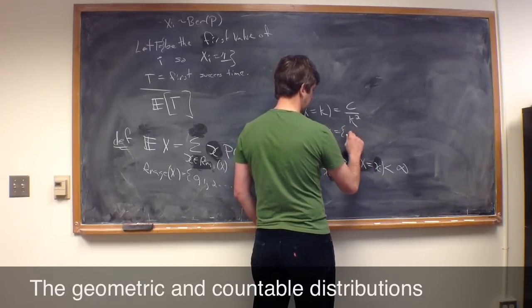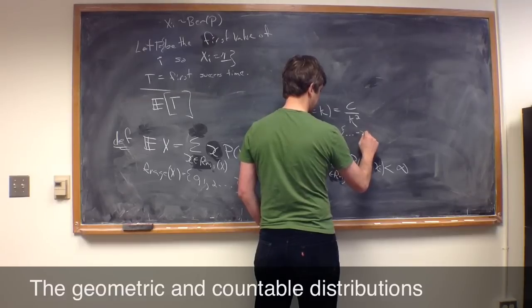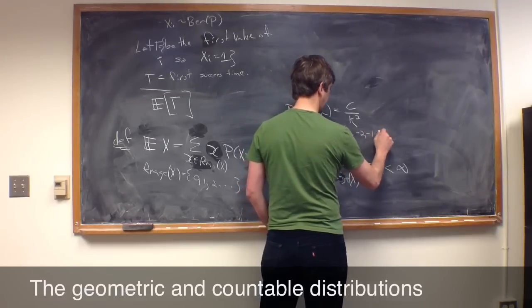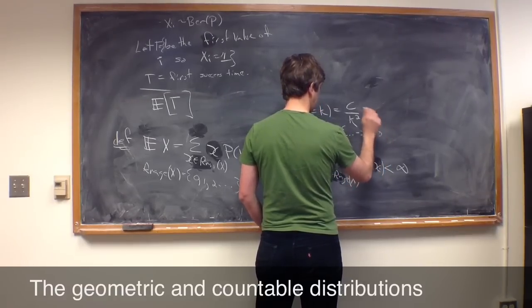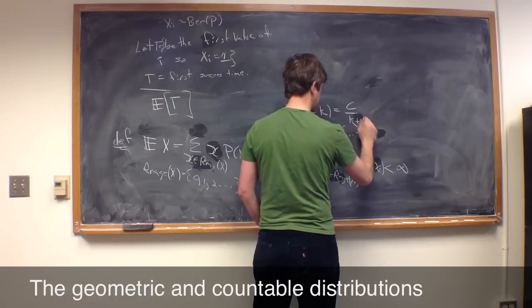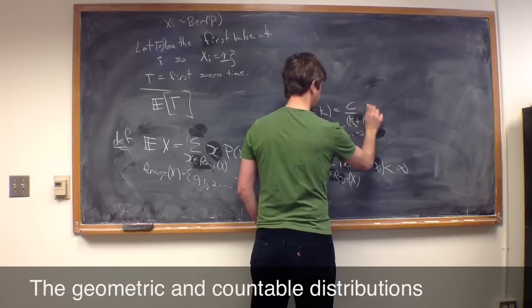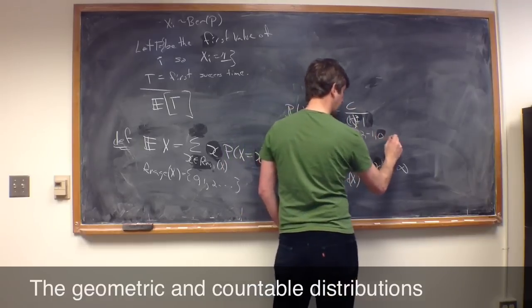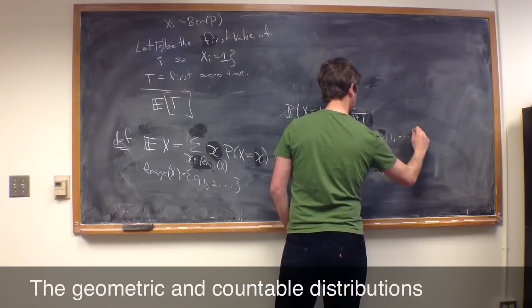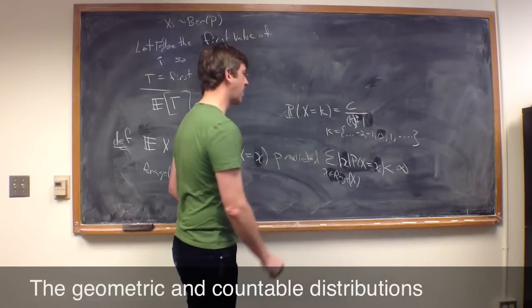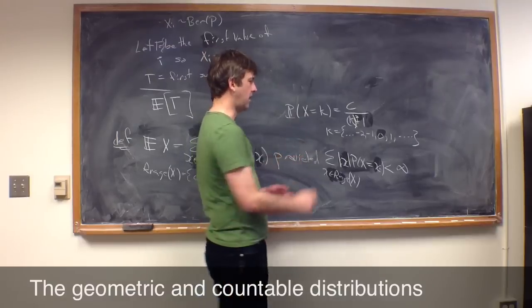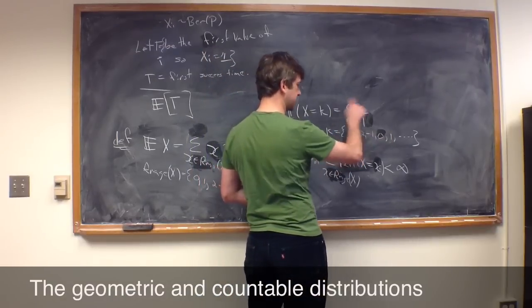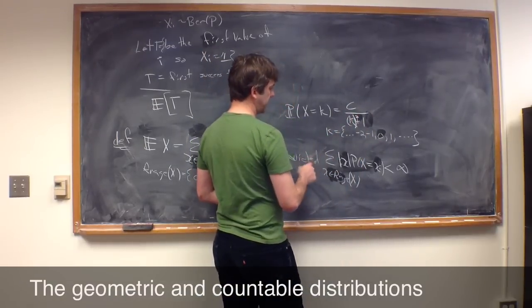and here we're going to let K equal be all the negative and positive integers. So, it'll start at dot, dot, dot, minus 2, minus 1, 0, let's just make this K squared plus 1. So now the problem with this, you notice, is that although we can pick a C so that the sum of this is equal to 1, we have a problem.